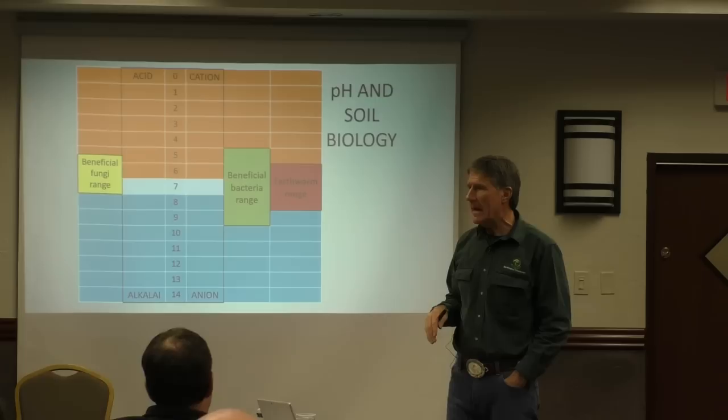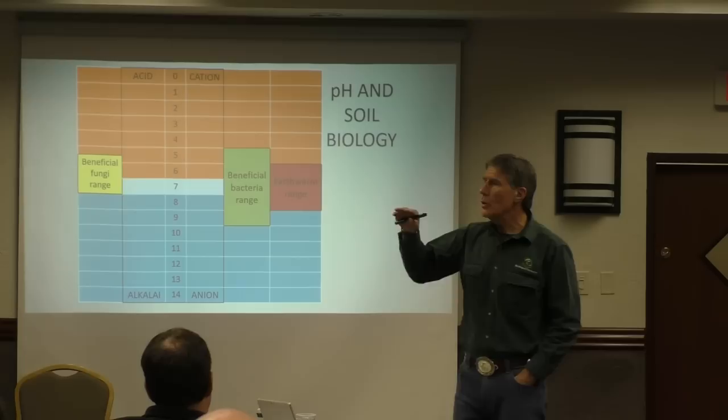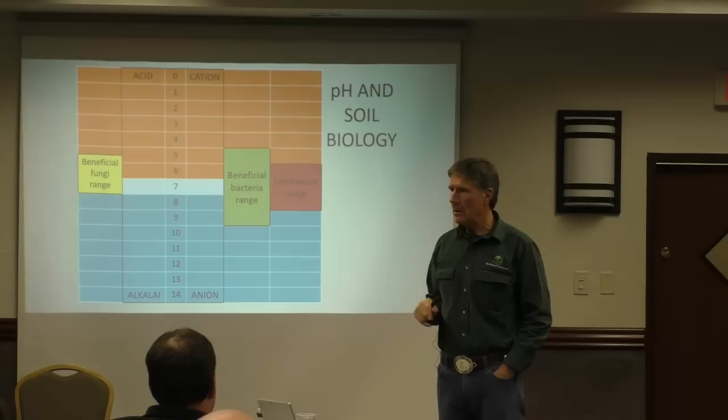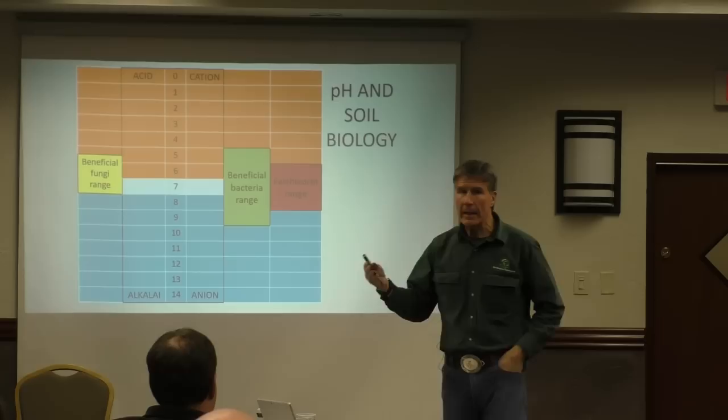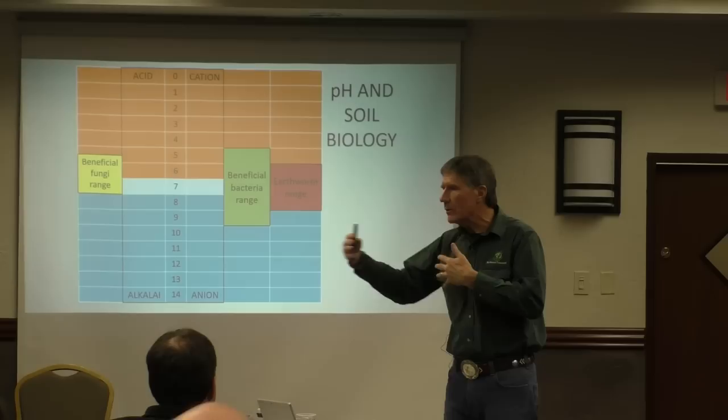Neutral pH is seven — above seven is alkaline, below seven is acidic. If you've got a pH of eight, you can still grow a plant, it's just that that pH will cause some minerals to not get into the plant quite so easily. But we can overwrite a little of that with biology. There are ways to fix this — this is where we go back to the Brix reading.